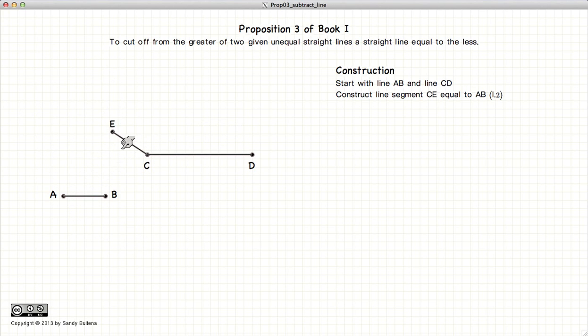So all of that fancy stuff was what was described in Proposition 2. So now AB is equal in length to EC. Next we draw a circle with C as the center and EC as the radius. And we'll label that point F.